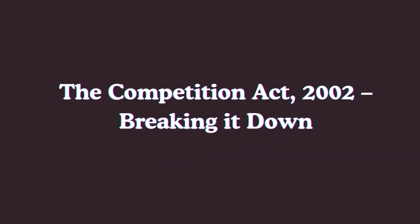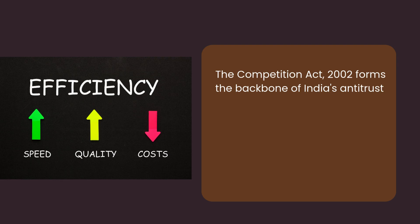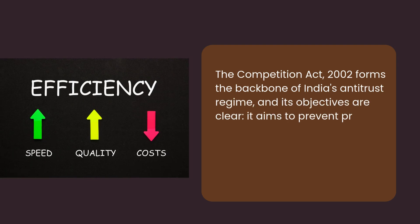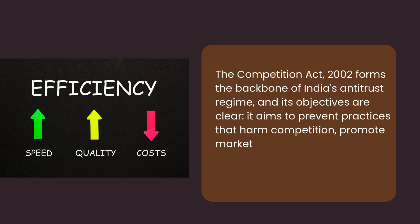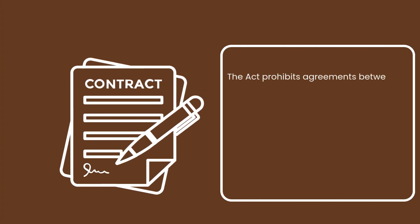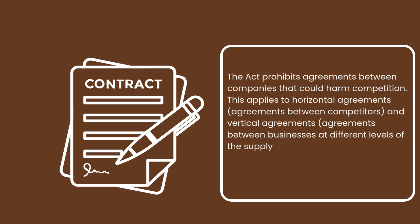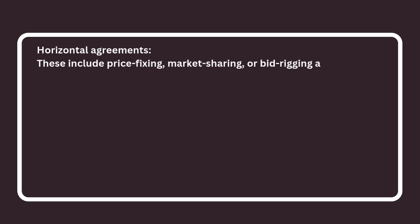The Competition Act 2002 forms the backbone of India's antitrust regime. It aims to prevent practices that harm competition, promote market efficiency, and promote consumer welfare. Number one, anti-competitive agreements. The Act prohibits agreements between companies that could harm competition. This applies to horizontal agreements — agreements between competitors — and vertical agreements — agreements between businesses at different levels of the supply chain, like manufacturers and distributors. Horizontal agreements include price fixing, market sharing, or bid rigging among competitors, and are considered inherently harmful to competition.